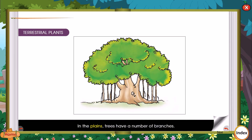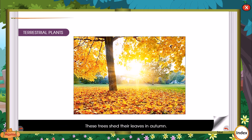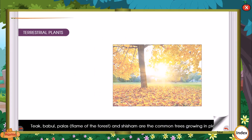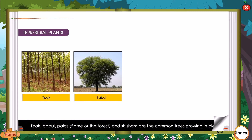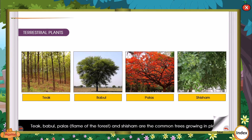In the plains, trees have a number of branches. These trees shed their leaves in autumn; they are called deciduous trees. Teak, babul, palas, flame of the forest, and sheesham are common trees grown in the plains.